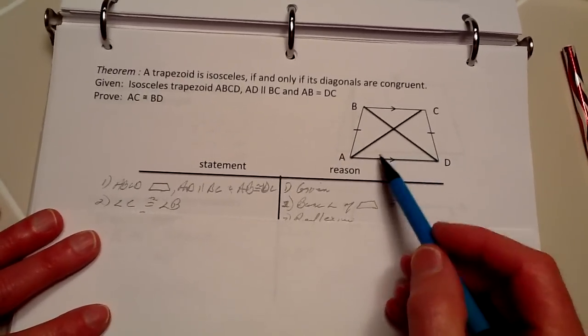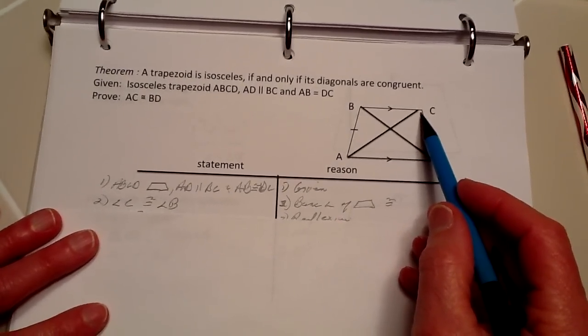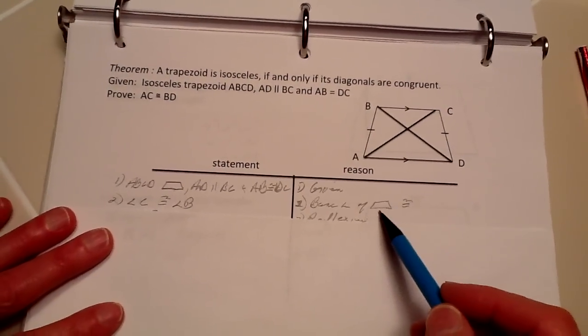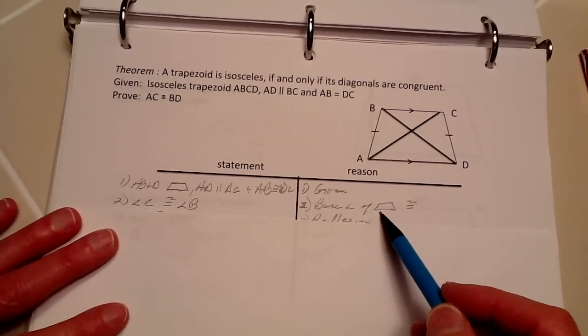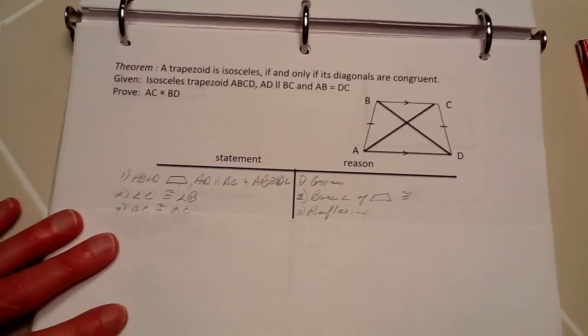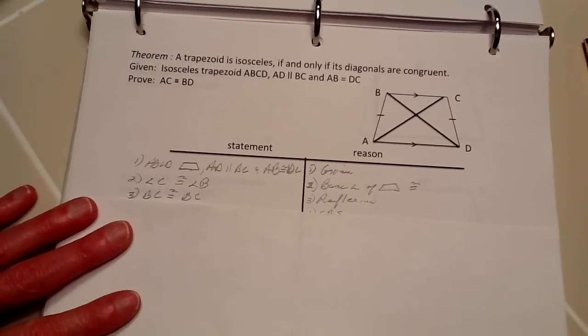Next, we know that angle C and angle B are congruent because base angles of an isosceles trapezoid are congruent. We've proved that in an earlier situation.